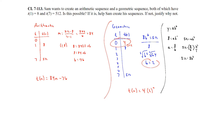I also showed how to solve this using systems of equations. Setting up the two equations: 8 equals a times b to the 1st, and 512 equals a times b to the 7th. After substitution, you get the same result: 512 equals 8b to the 6th. Once you find b, plug it back in to find your a value.